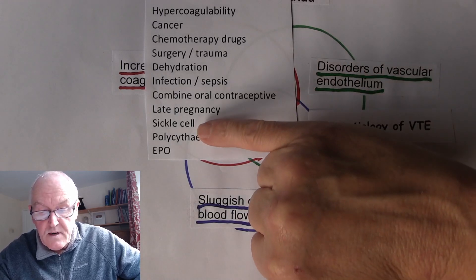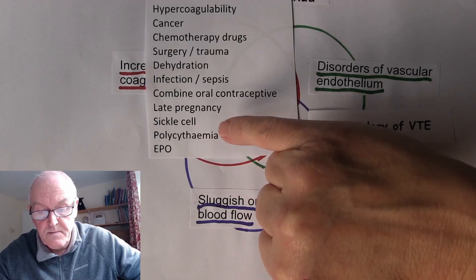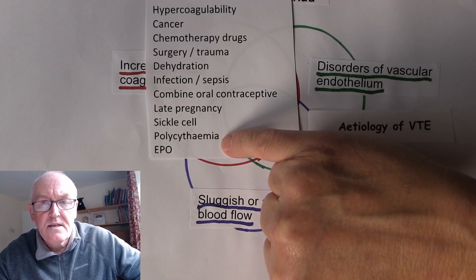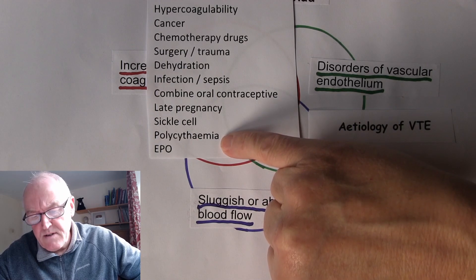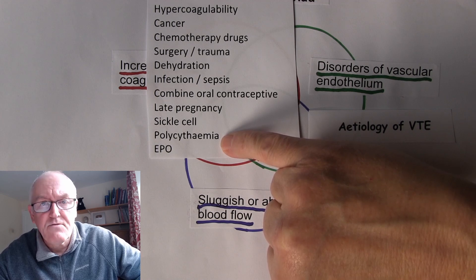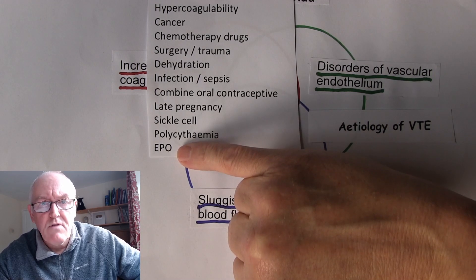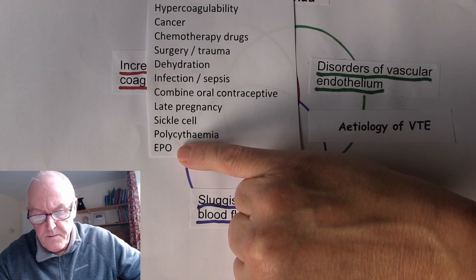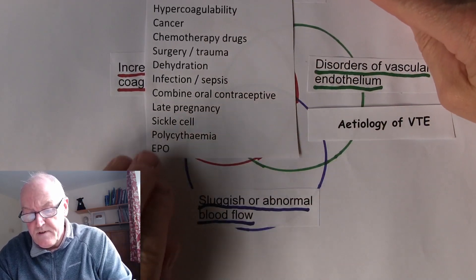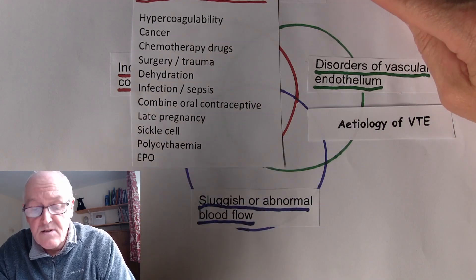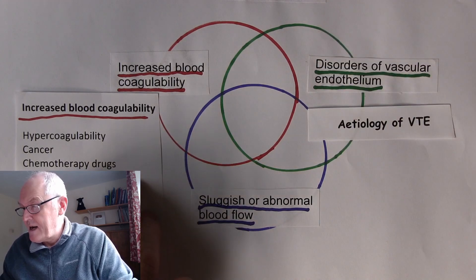Other conditions include sickle cell disease, which is an inherited condition. Polycythemia — a descriptive term — describes an increase in the haematocrit, an increase in the number of red cells. People who abuse erythropoietin and inject EPO are going to be more at risk of DVT/PE because of increased blood coagulability, since the blood will be thicker. So those are the key factors in terms of increased coagulability.